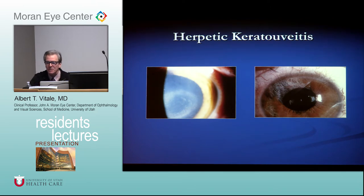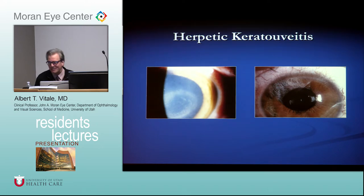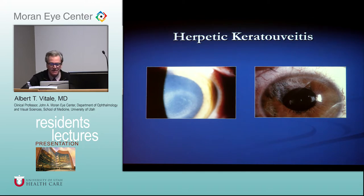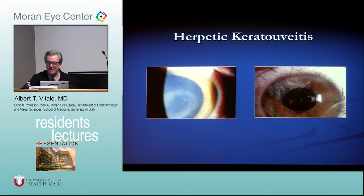With herpes, there are usually stigmata of herpetic infection, though not always — you can have herpes sine herpete. For board purposes and clinically, always look for stigmata. In one panel you have a patient with an immune ring and stromal keratitis; on the right, a patient with sectoral iris atrophy. True or false: sectoral iris atrophy is pathognomonic for varicella zoster infection — false. You can see it in either HSV or VZV.